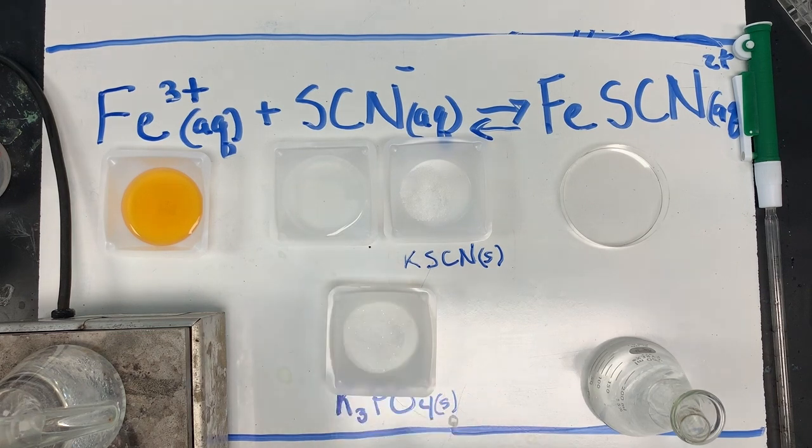In the second dish, I have clear potassium thiocyanate. Potassium acts as a spectator. It's also there with the thiocyanate.